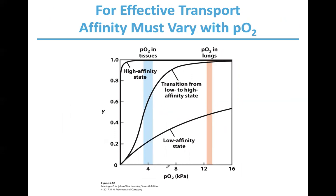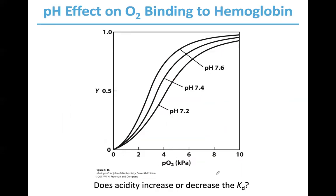We have just a few minutes left. The Bohr effect — how acidity affects oxygen affinity — is very important because tissues are much more acidic than the lungs, and acidity contributes to oxygen affinity for hemoglobin. I don't want to start that topic now with so little time, so I'm done with the slides. Please ask any remaining questions.